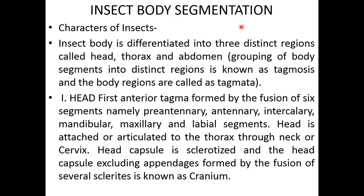The insect body is differentiated into three distinct regions. The head is the anterior tagma — the anteriormost segment — which is formed by the fusion of several sclerites, specifically the anterior tagma of six embryonic segments.